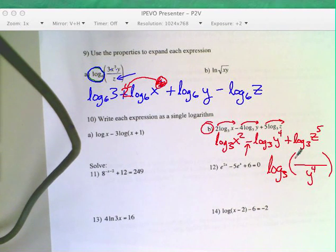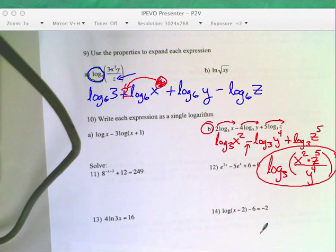The only thing that goes to the bottom is the one with the negative here, which would be y to the 4th. One with the 4th goes to the bottom. The other two both go up top. A lot of people want to throw this down with it, but that is a plus in front of it, so the z to the 5th goes up. That's how you kind of work your way to the answer in that one.